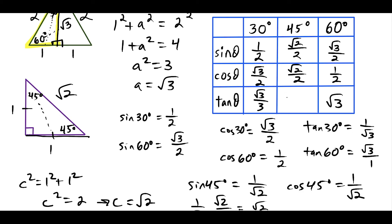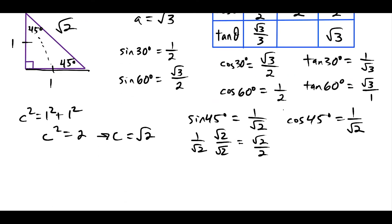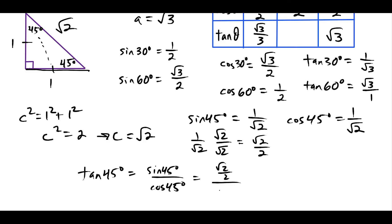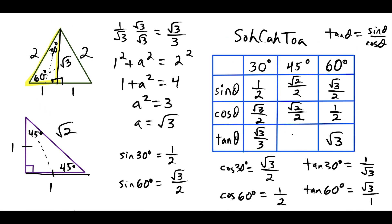For tangent of 45 degrees, we can use tangent equals sine over cosine. Since sine and cosine of 45 are both equal to the same value, this simplifies to 1. So tangent of 45 degrees equals 1.